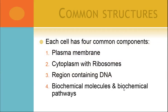So basic cell structure: each cell has four common components, no matter what it is — prokaryote or eukaryote. It has a plasma membrane. It has cytoplasm, that jelly stuff, and there are ribosomes in it — ribosomes are really important. It has a region containing DNA, whether it's just a nucleoid region as in a prokaryote or an actual nucleus as in a eukaryote. And then there are biochemical molecules and biochemical pathways that are the processes of life, including transport across the plasma membrane and getting waste in and out.